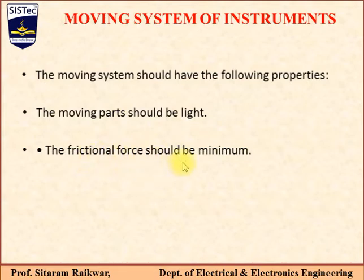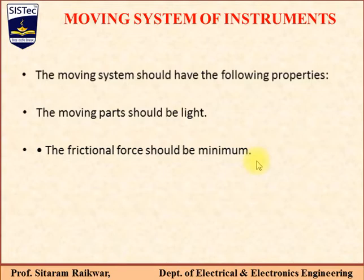The friction force should be minimum. In the moving part there is a spindle, which we can also call a shaft. Similarly to how the rotor rotates in electrical motors and generators, in instruments too, the moving coil, moving iron, and similar parts require a lightweight moving system to move.